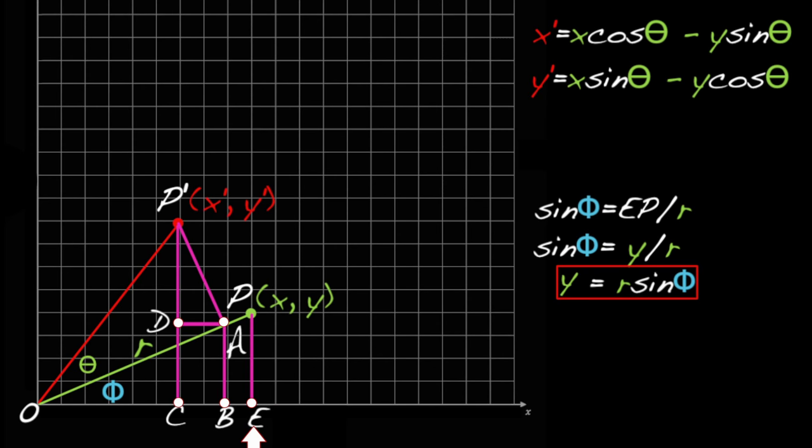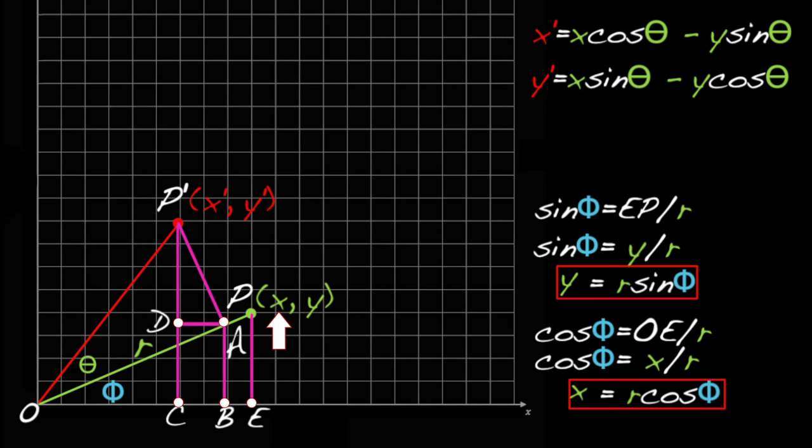Similarly, OE is adjacent to phi, so cosine phi equals OE over r. But OE is just x, so cosine phi equals x over r. And that means x equals r cosine phi.